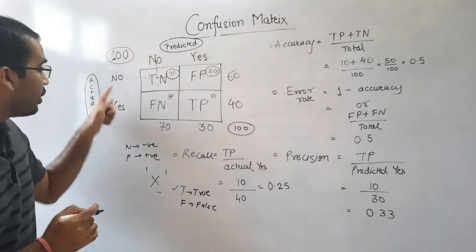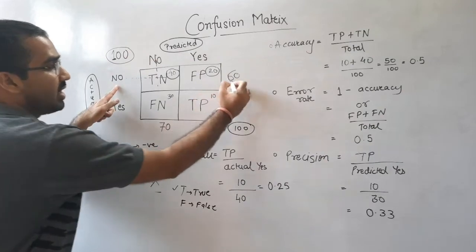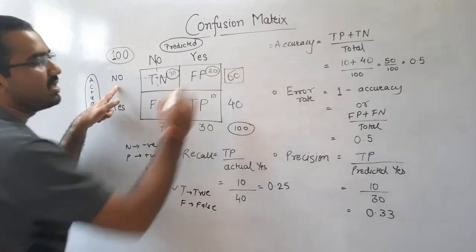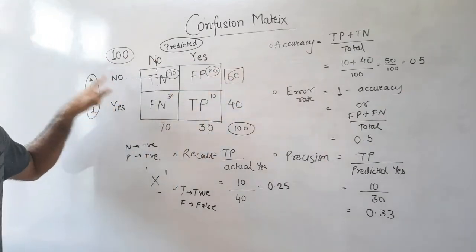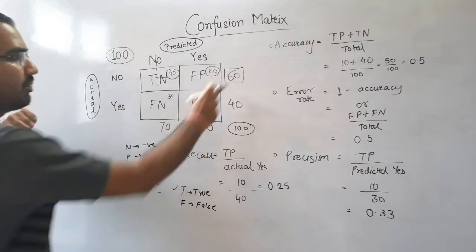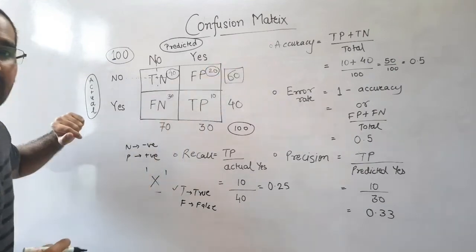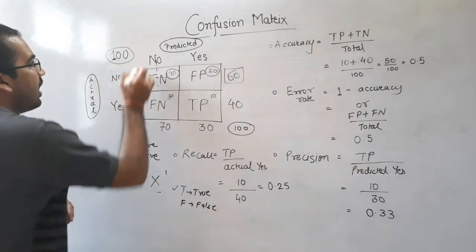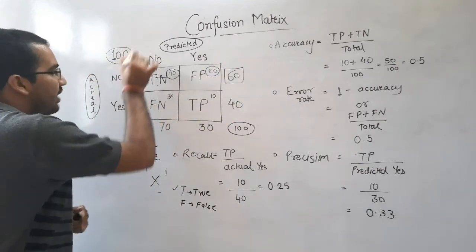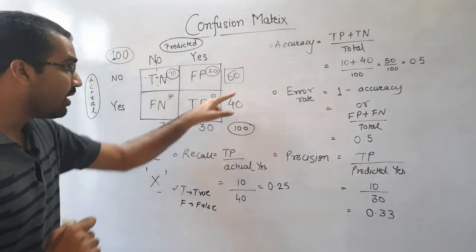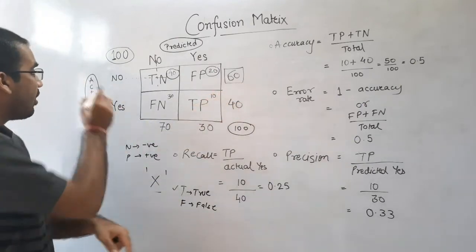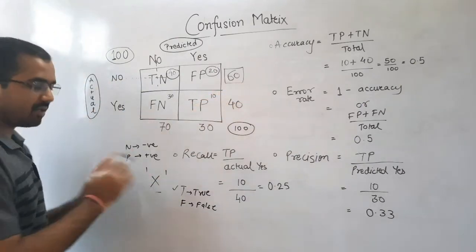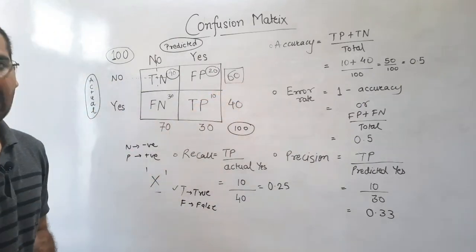If you summarize these things, you get the figure 60 for 'actual no' — meaning out of these 100 samples, there are 60 patients who are actually not affected by disease X at all.